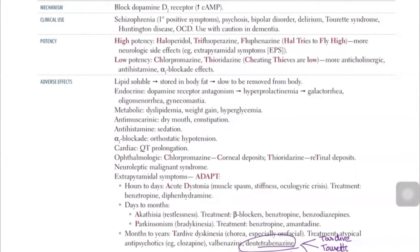Acute dystonia means the patient has muscle spasms, stiffness, and oculogyric crisis — where the eyes roll over — and neck or head tension. Treatment requires giving anticholinergics — benztropine and diphenhydramine. In the extrapyramidal tract, there is a balance between dopamine and acetylcholine. When dopamine is blocked, the cholinergic component becomes dominant, so we must balance it by suppressing acetylcholine with benztropine or diphenhydramine, which block the cholinergic receptor.